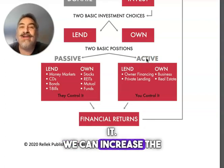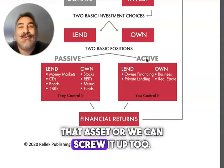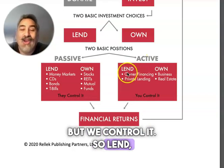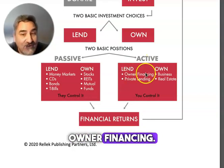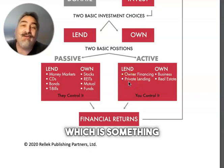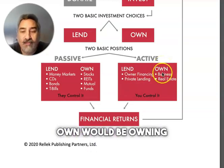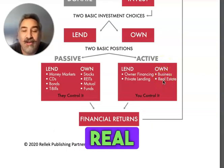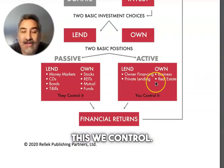We can increase the value of that asset — or we could screw it up too — but we control it. So on the lending side, that's owner financing and private lending, which is something we'll talk about. On the ownership side, that would be owning a business and owning real estate. This we control.